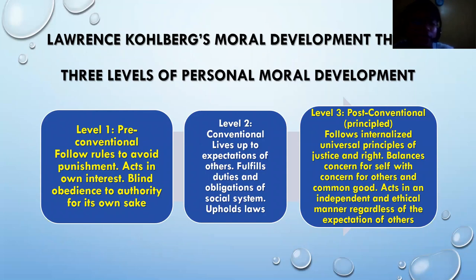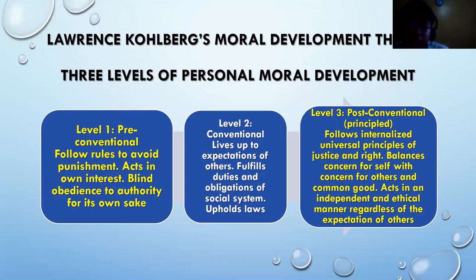To summarize Kohlberg's levels: at level one, pre-conventional, the individual avoids punishment and acts in self-interest, with a blind deference to authority. At level two, conventional, the individual lives up to the expectations of others in order to fulfill the duties and obligations of the social system and uphold the law — for example, the child who prohibits others from smoking because the law says so. At level three, post-conventional, the individual follows internalized and universal principles of justice and right, balances concern for self with concern for others, and acts in common good or in an independent and ethical manner regardless of the expectations of others — this is when the person becomes principled and stands for his or her own views.